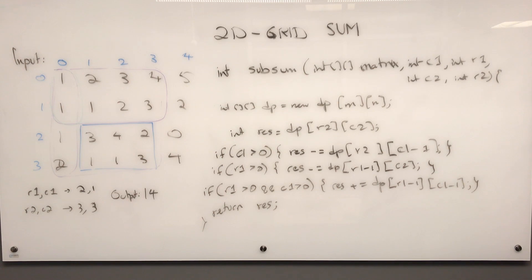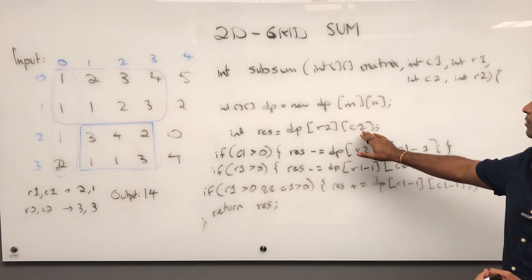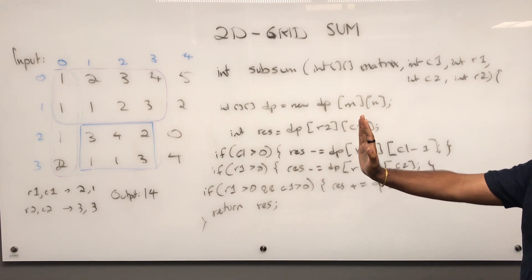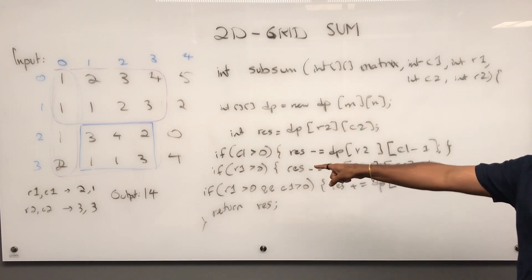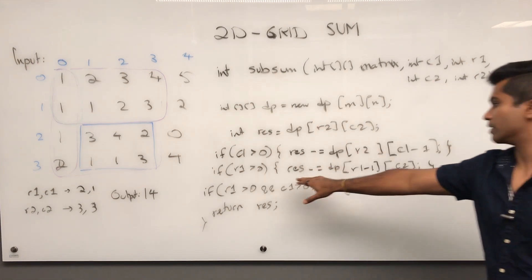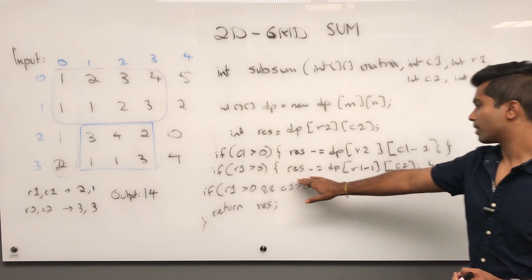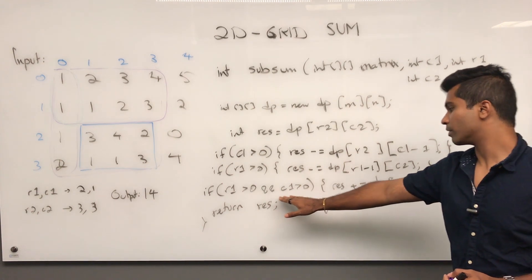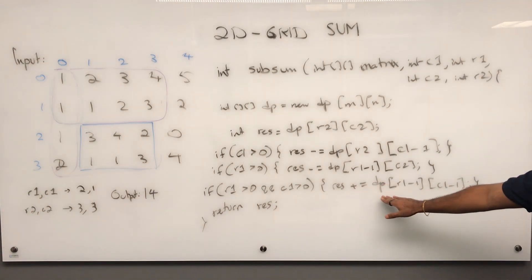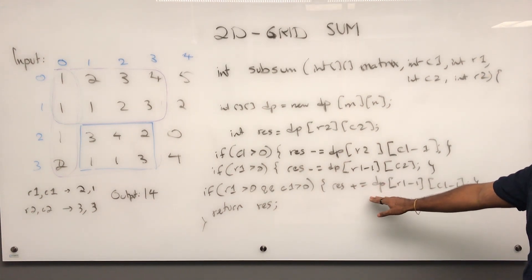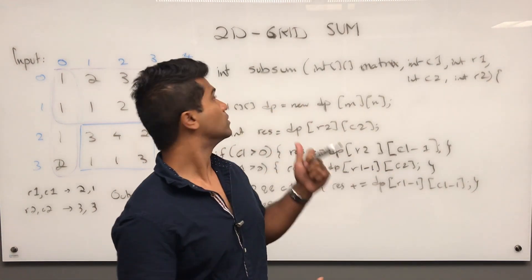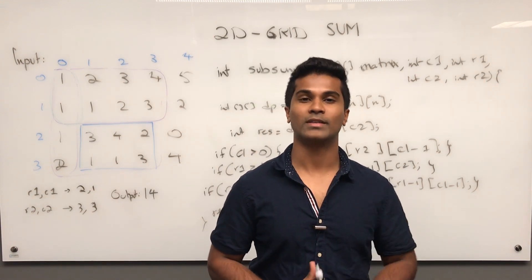Let me just double check. R2 c2, c1 is greater than 0, we have the row, and c1 minus 2, and then r1. When we're taking care, this is for the upper rectangle. We take r1 minus 1, and then c2. And if they're both greater than 0, then we take back the corner and return the result. So that's how you solve 2D grid sum. If you liked the video, please let me know, and thank you for watching.